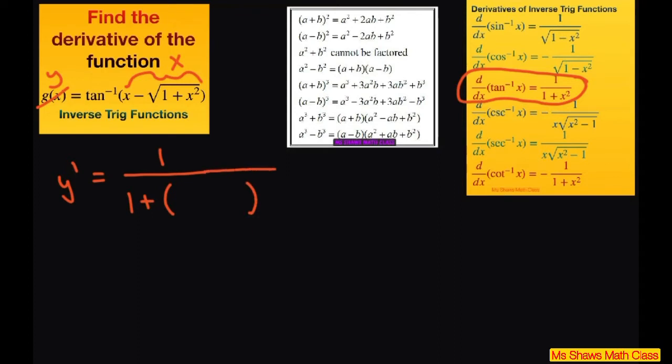We're going to use our formula for derivatives of inverse tan functions. So y prime equals 1 divided by 1 plus all of this squared — that's going to be x plus square root of 1 plus x squared, all squared.